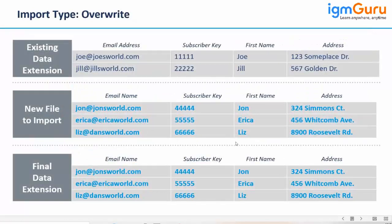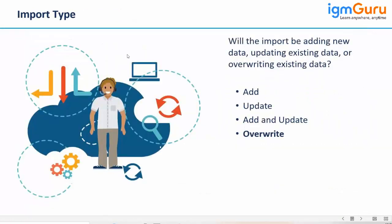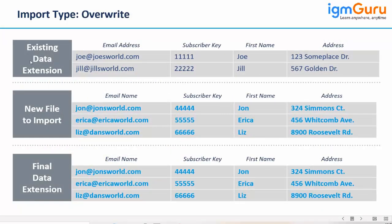I just tried to explain the import types in the list: add, update, and add and update. Now the third one is overwrite. If you have a case of overwrite, this is the existing data extension in which you have records Joe and Jill, and you have a new CSV file with John, Erica, and Liz — all new customers. You select the import type overwrite, and after completing the import, all three new customers are added and the older ones are removed.